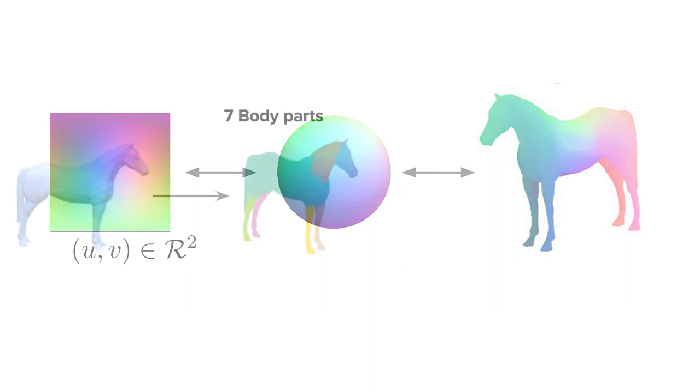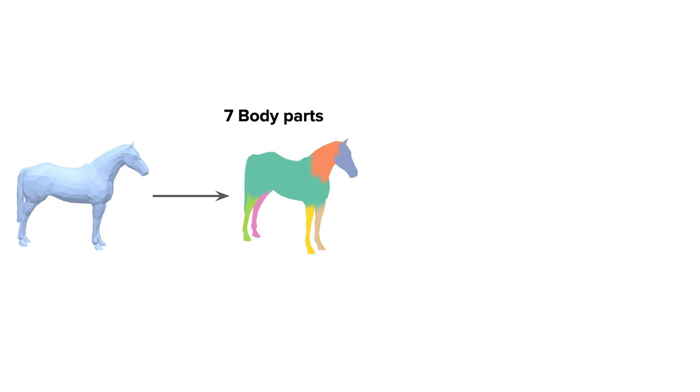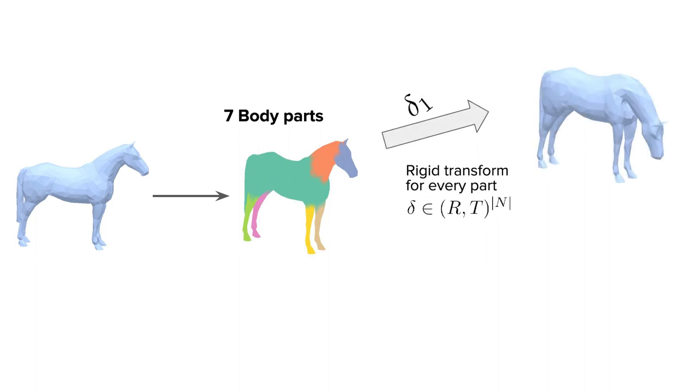Next, we model animal's articulation. For this, we first manually divide a 3D model in 7 body parts. Yes, unfortunately, we cannot avoid this step and human labor is necessary. After that, the articulation is modeled by rigid transformations of the vertices of different parts relative to the body. And this way, we can get a horse standing or running, for instance.